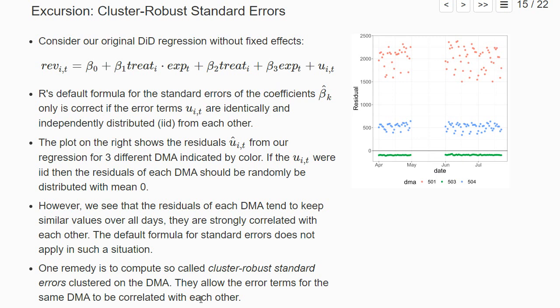One remedy to get correct standard errors is to compute so-called cluster-robust standard errors. The standard errors are also correct if we allow for the error terms for the same DMA to be strongly correlated with each other, what we see here in this dataset.